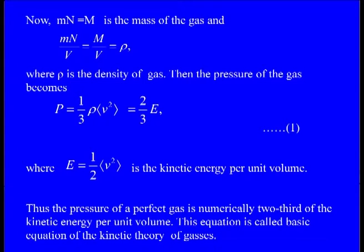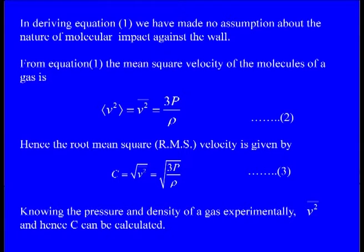This is another way to write down the basic equation of kinetic theory of gases. The pressure of a perfect gas is numerically two thirds of the kinetic energy per unit volume. In deriving this equation, we have made no assumptions about the nature of molecular impact against the wall.